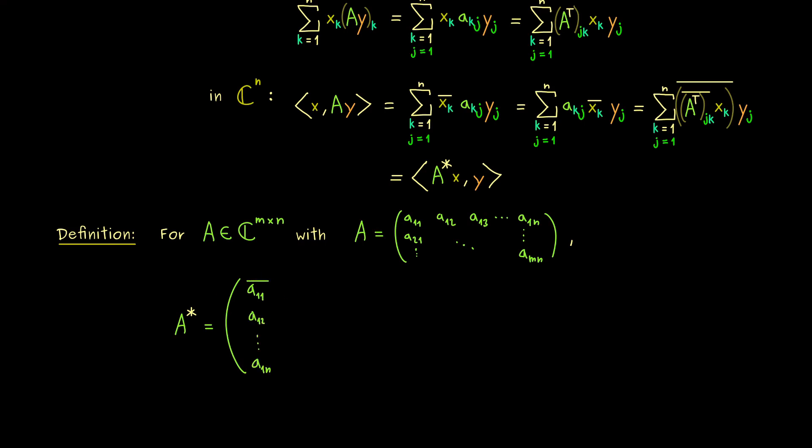This means each entry here gets a line on top. So not so complicated at all if you already know the transpose. And indeed, this is also a very important fact of the adjoint. The numbers of rows and columns changes. More precisely, this is now an n times m matrix.